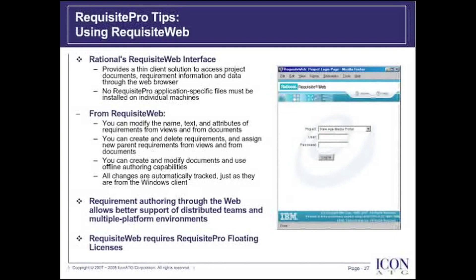Rational's Requisite Web interface provides a thin client solution to access project documents, requirement information, and data through a web browser. From Requisite Web, you can modify the name, text, and attributes of requirements from Views and Documents. You can create and delete requirements, assign new parent requirements, create and modify documents, use offline authoring capabilities, and all changes are automatically tracked just as they would be from the Windows client.